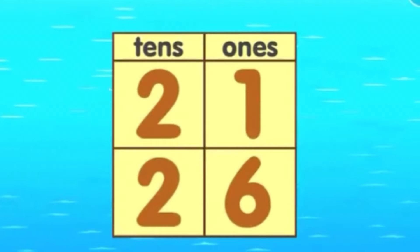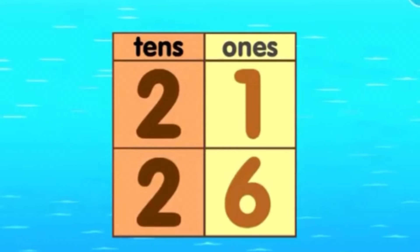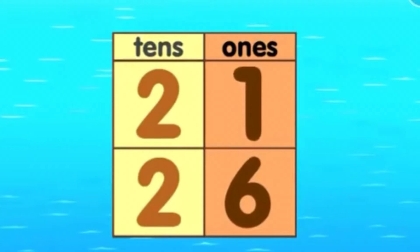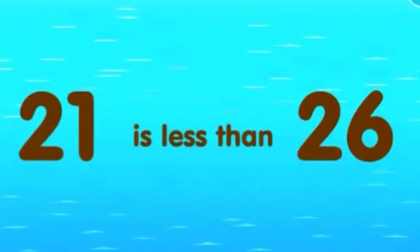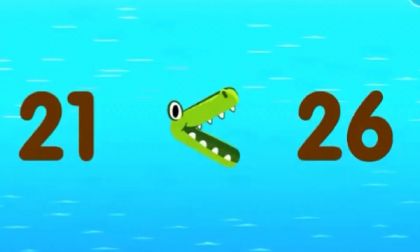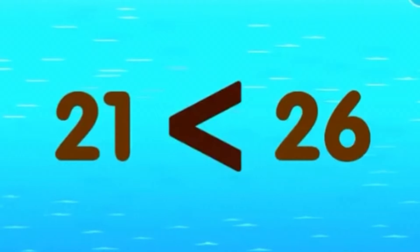This time, we are comparing 21 and 26. Let's compare the tens first. Oh, the tens are the same. Then we look at the ones — 1 is less than 6. Therefore, 21 is less than 26. Now, the alligator's mouth opens to the larger number like this.